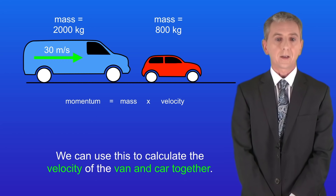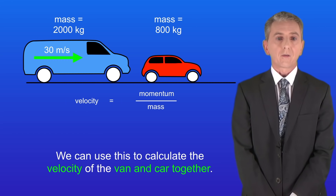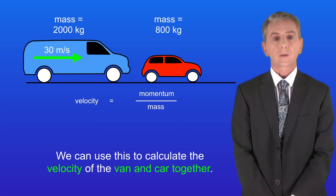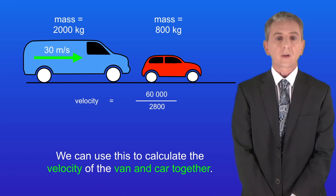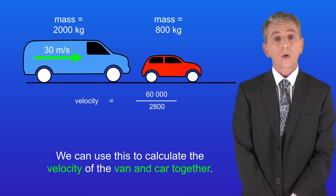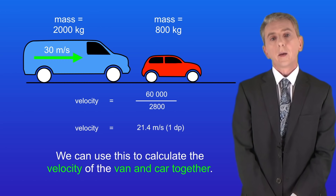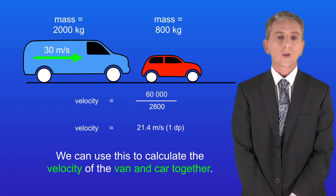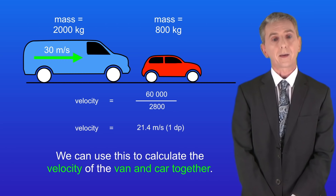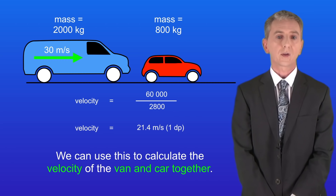Remember that momentum equals the mass multiplied by the velocity. That means that the velocity equals the momentum divided by the mass. The momentum after the collision is 60,000 kilograms meters per second, and the total mass of both the van and the car is 2800 kilograms. Putting these into the equation gives us a velocity of the car and the van combined of 21.4 meters per second to one decimal place.